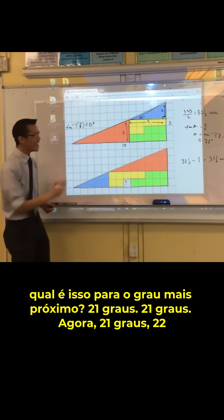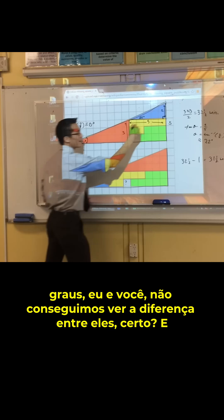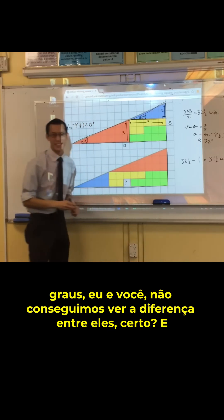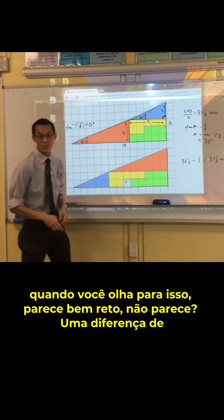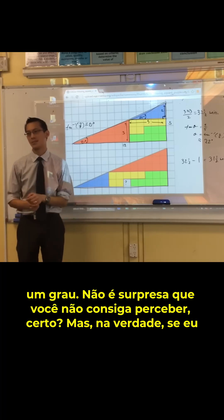Now, 21 degrees, 22 degrees, you and me, we can't tell what the difference is between those. Okay? And when you have a look at that, it looks pretty straight, doesn't it? One degree difference, no one can tell.